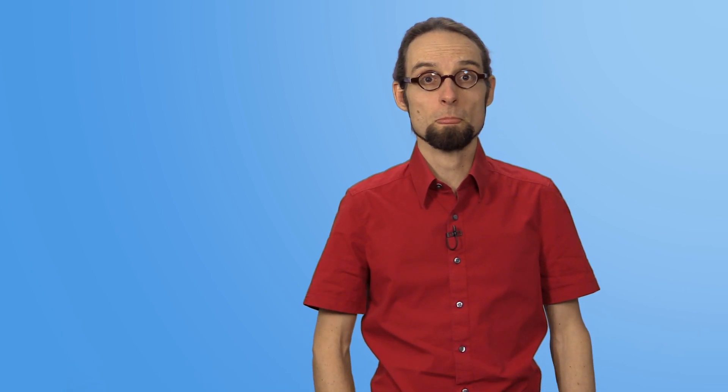Using the travel time graphs, the scientists then calculated how the propagation velocities change with depth and how the shape of the curves observed came to be. For P waves, the propagation velocity over depth is plotted here with a black line and for S waves with a gray line.